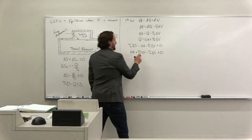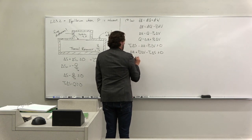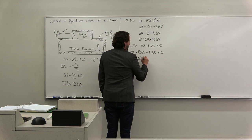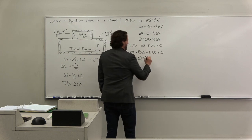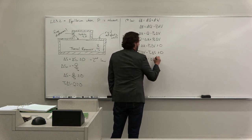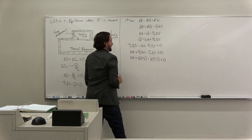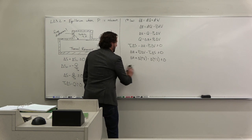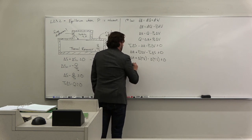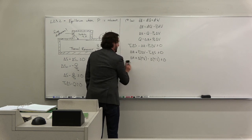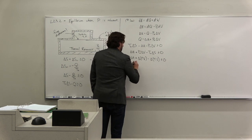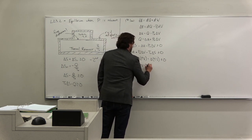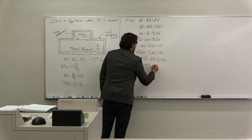So just like we did before, we can say, well, this is the same as delta of PV, and this is the same as saying delta of TS because those Ts are constant, and that's the same as saying delta of U plus PV minus TS is less than zero.